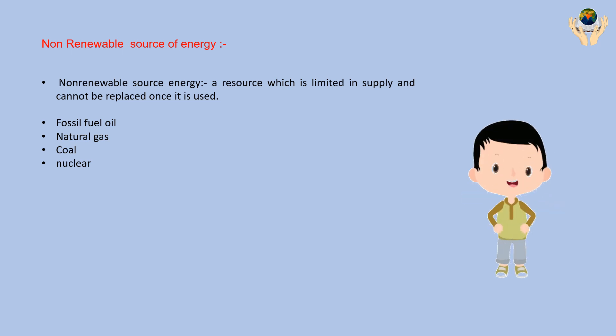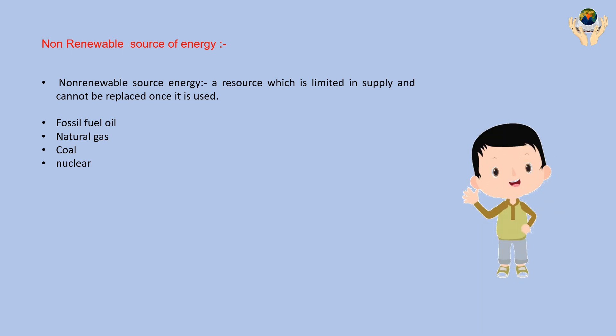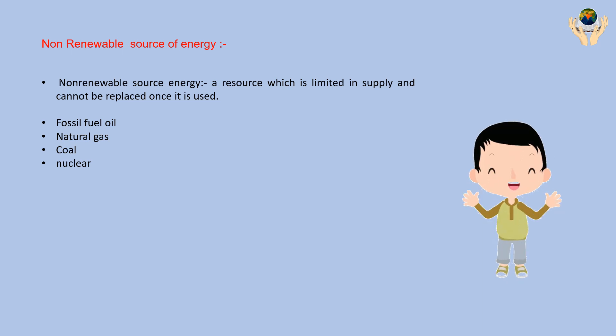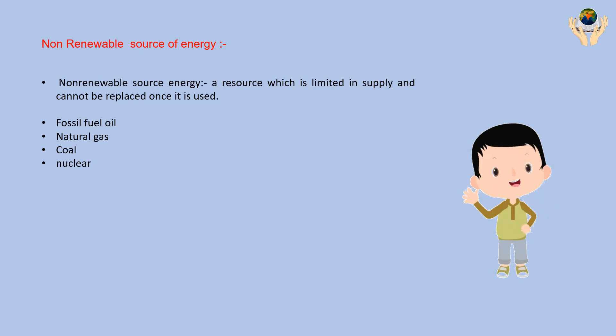The types of fossil fuels are: coal, petroleum, and natural gases such as methane.